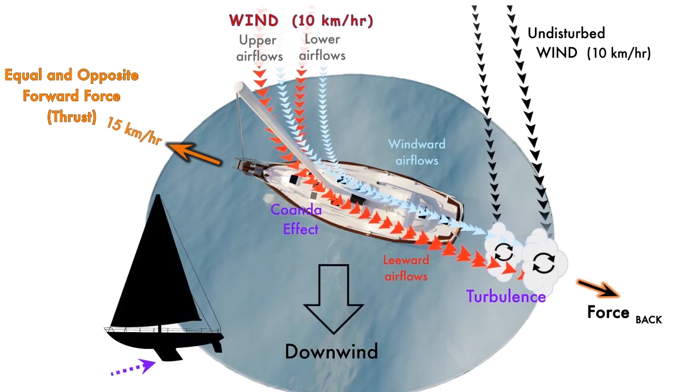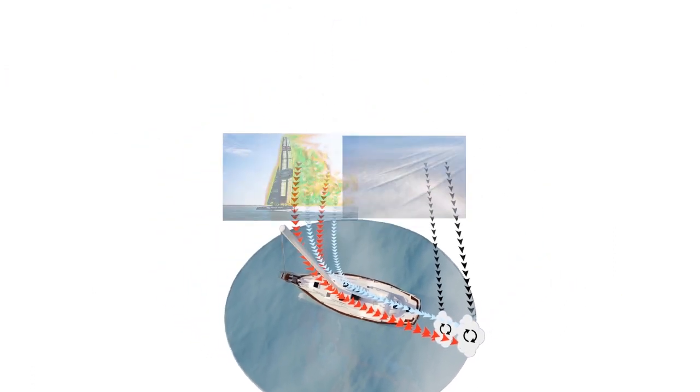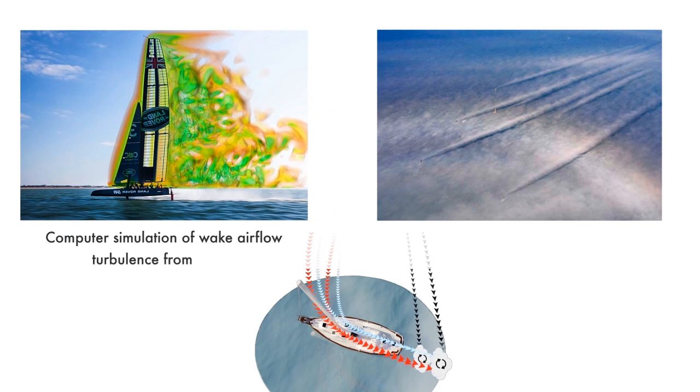The keel prevents the boat from being pushed downwind and from tipping over. Under the right conditions, the wake airflow turbulence can be seen behind the sails.